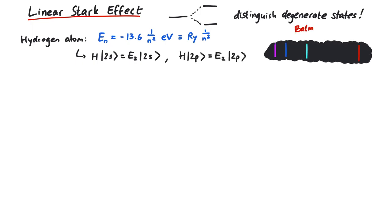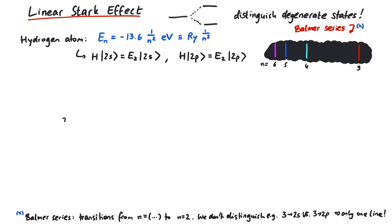Looking at the experimentally found spectral lines, it's true that we only get one line for all n equal 2 states. However, if we turn on an electric field, we can separate these lines.